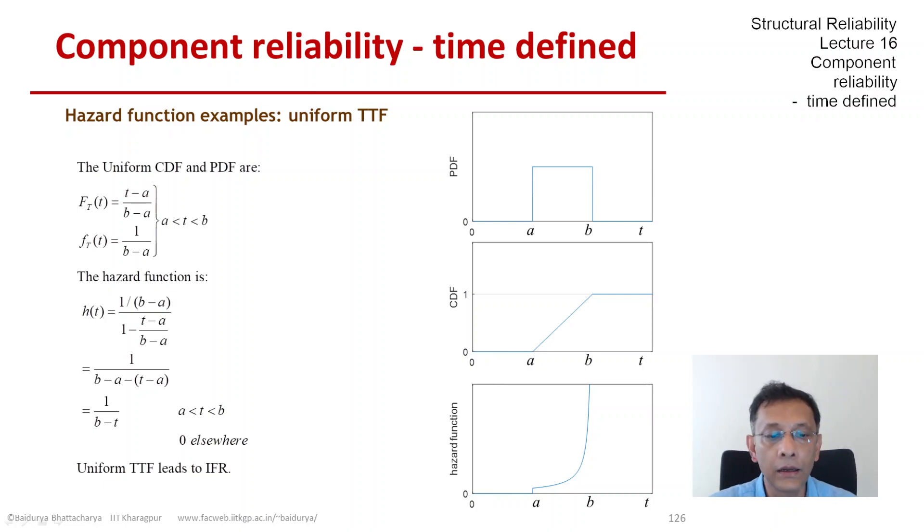But the area under this is infinite, so that the reliability function at b comes down to 0.